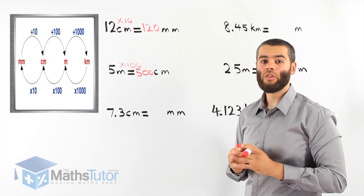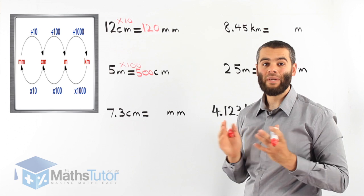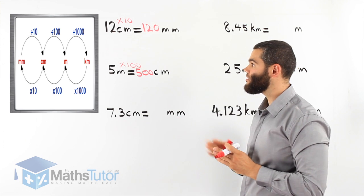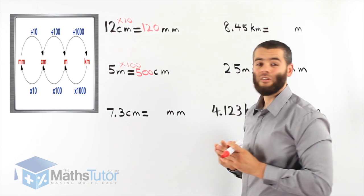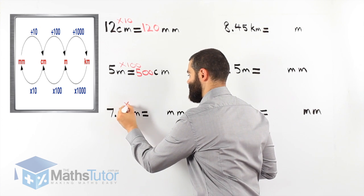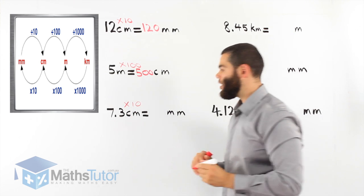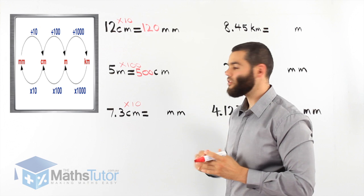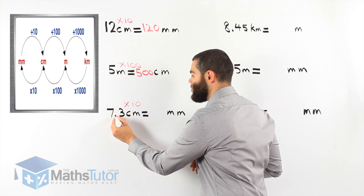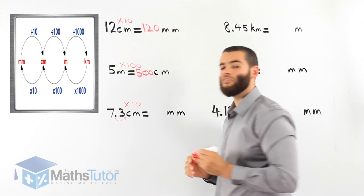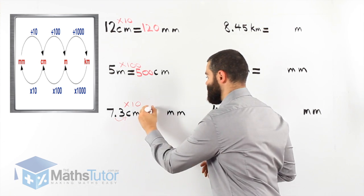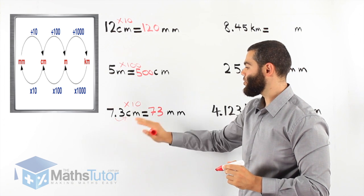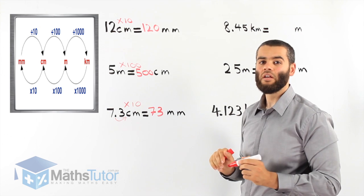Here we have 7.3 centimetres — how many millimetres is that? We know we're going from centimetres to millimetres, so we times by 10. You can use your calculator, but this is something simple. We know that in decimals, when we have 7.3 times 10, we move the decimal to the right once because there is one zero. So it becomes 73 millimetres. 7.3 centimetres is 73 millimetres.